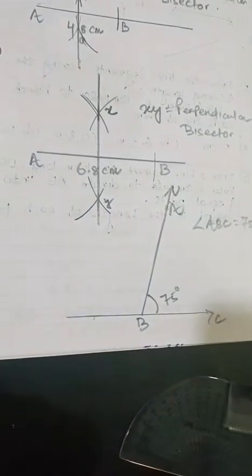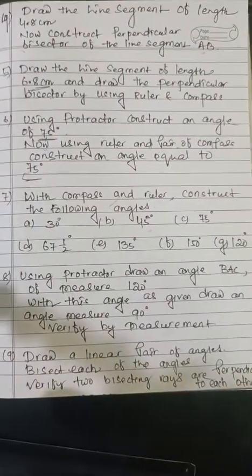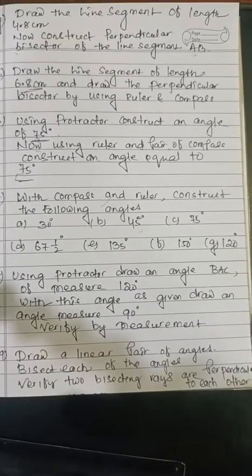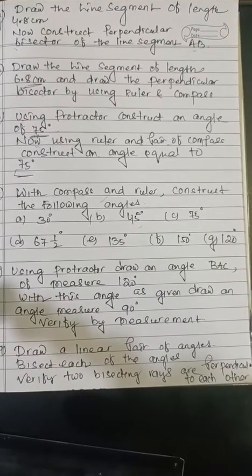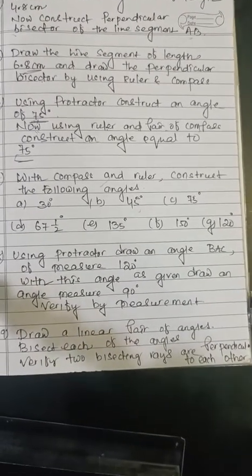Using the protractor, construct an angle of 75 degrees — this is done. Now, using the ruler and pair of compass, construct an angle equal to 75 degrees.